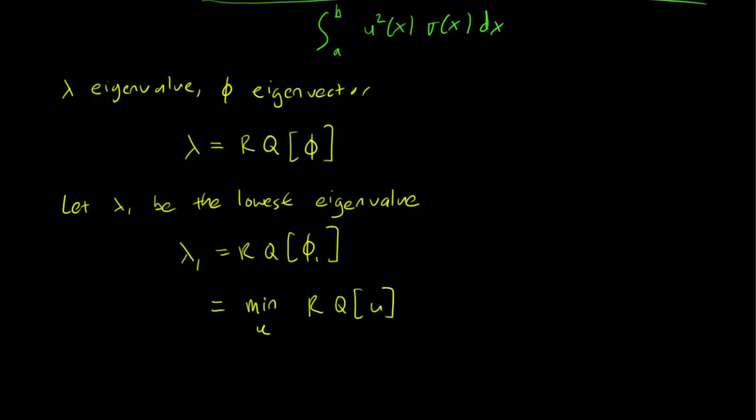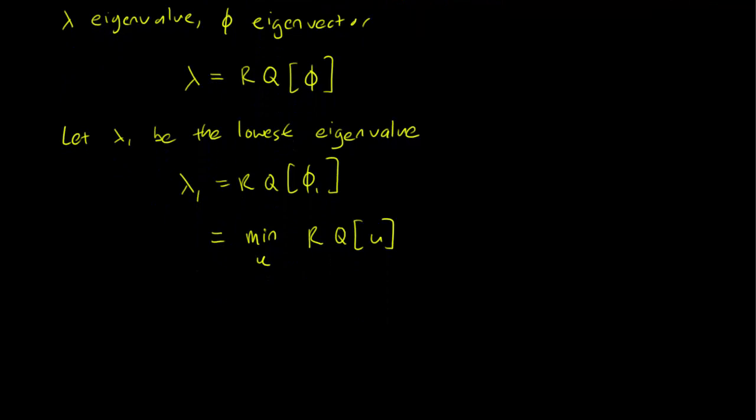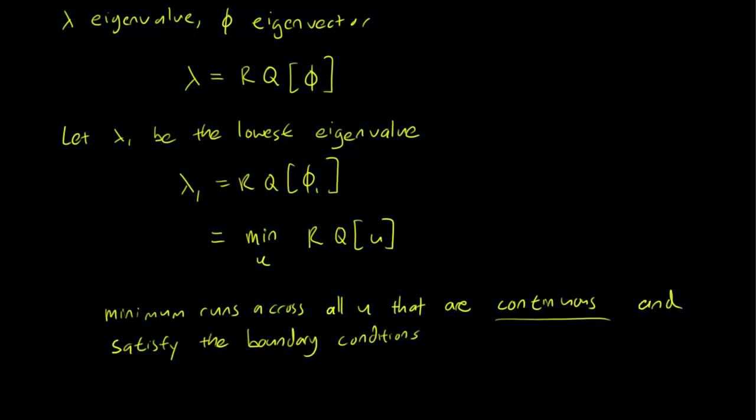We have to discuss what this minimum means. This minimum runs across all u, the u that are continuous and satisfy the boundary conditions of our Sturm-Liouville problem. We are leaving out something important here.